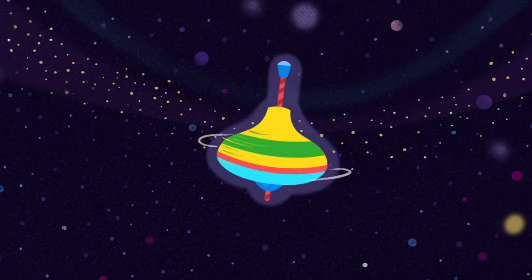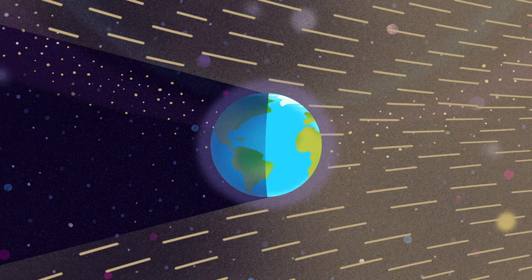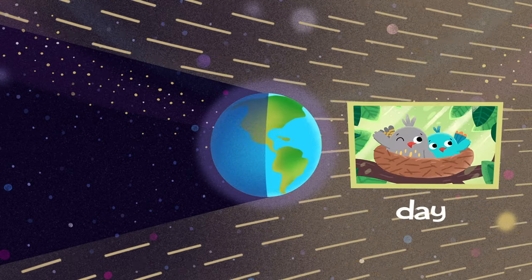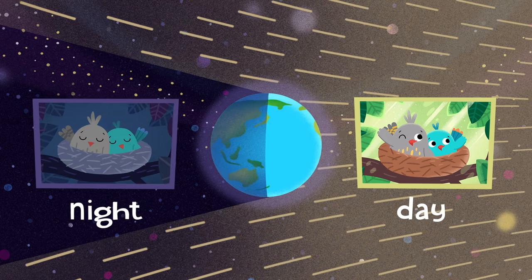Because of its rotation, the Earth turns one half or the other towards the sun. On the side that faces the sun, it's daytime. And on the opposite side that's not lit by the sun, it's nighttime.